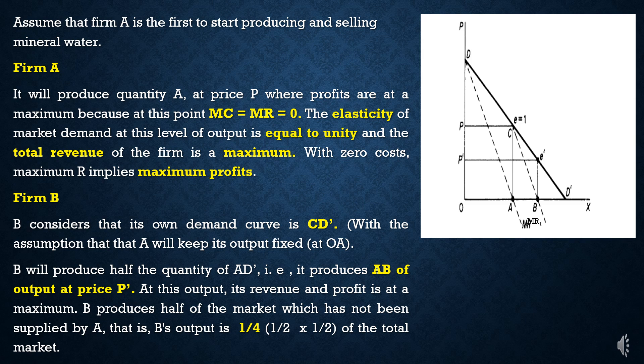Since the cost of production is zero, MC equals zero. Profit is maximized where MC equals MR equals zero. At this point, Firm A produces the OA level of output, where elasticity of demand equals 1, meaning total revenue is at its maximum.